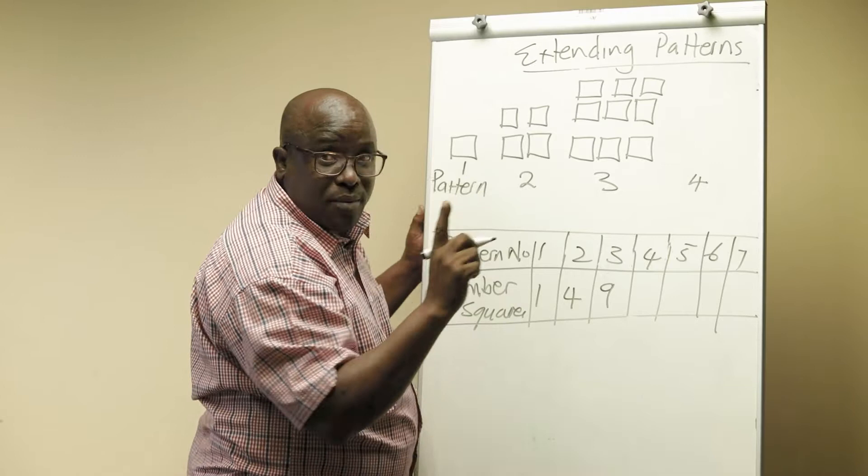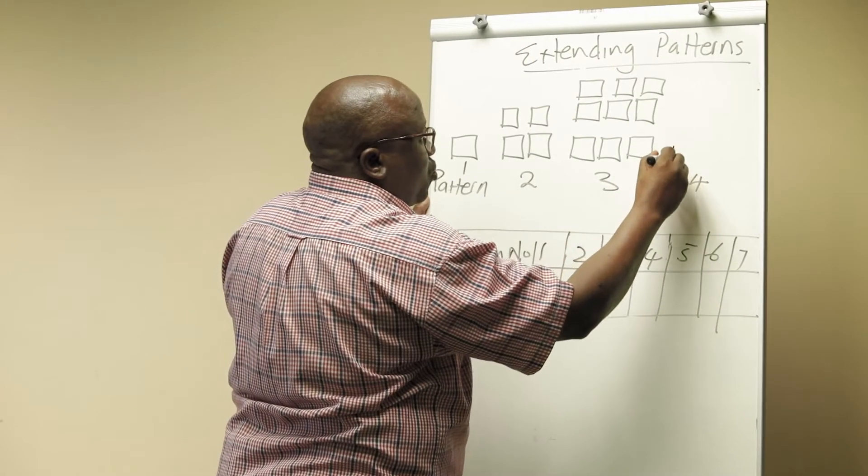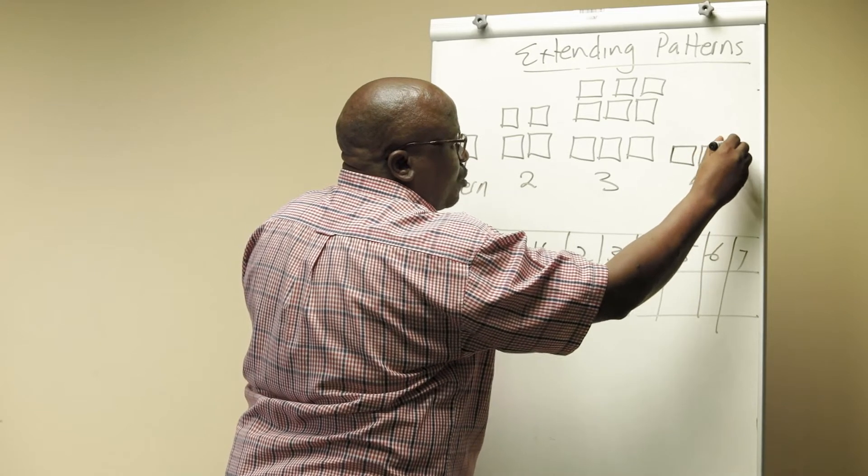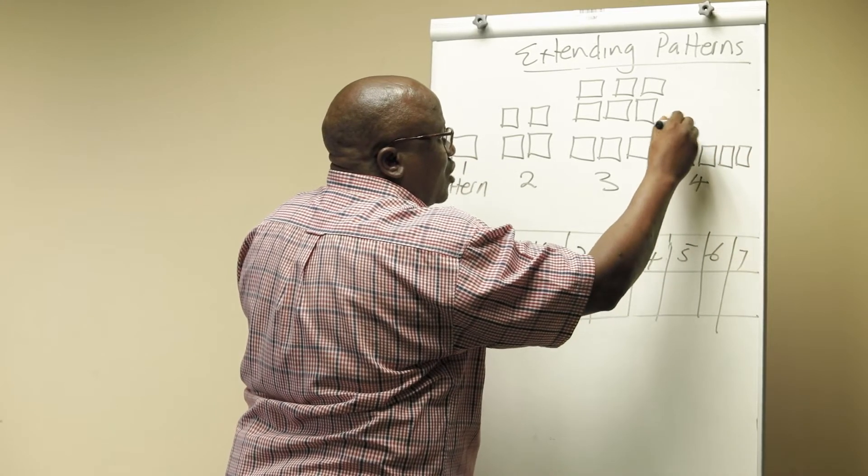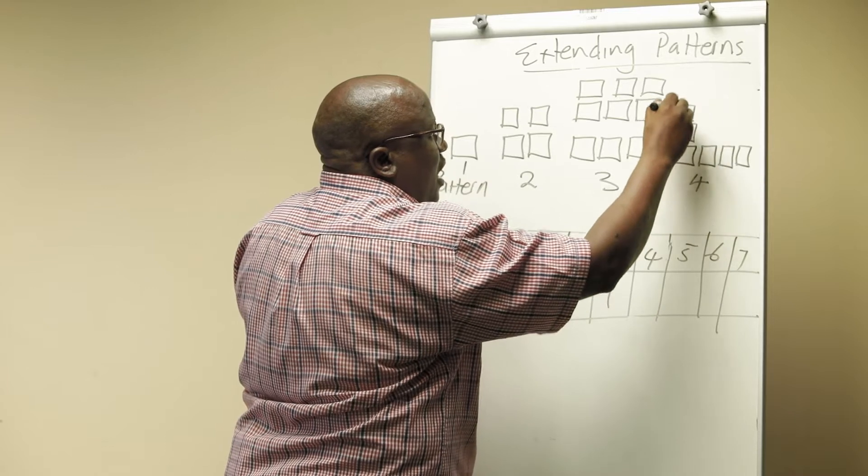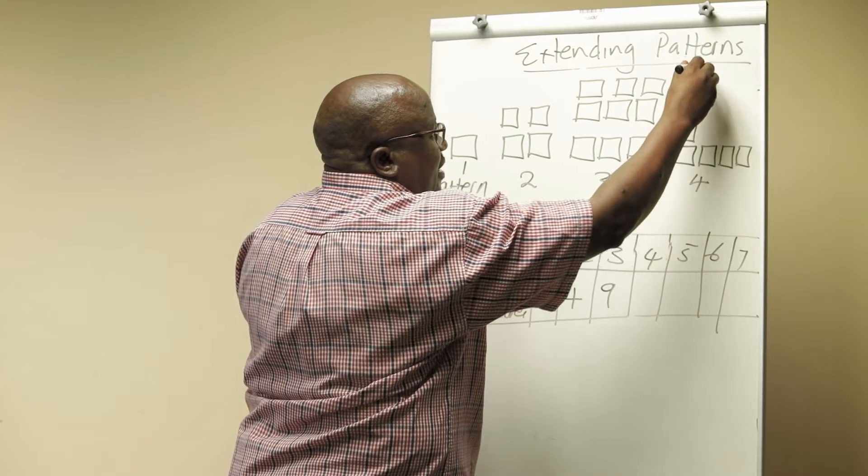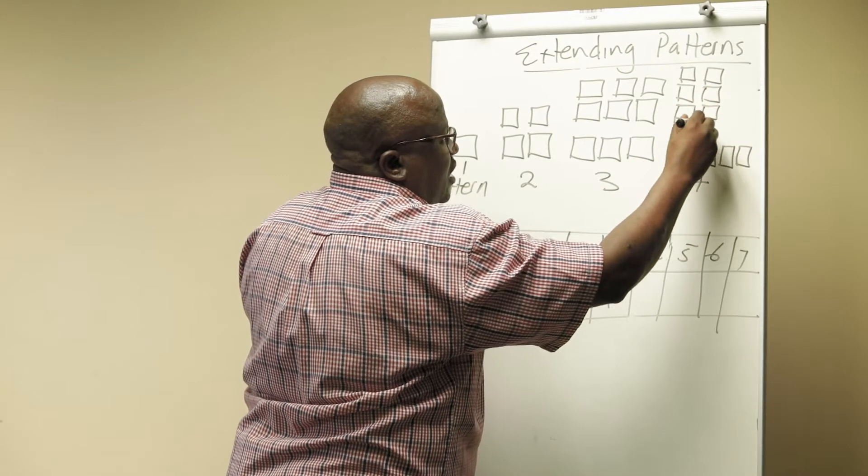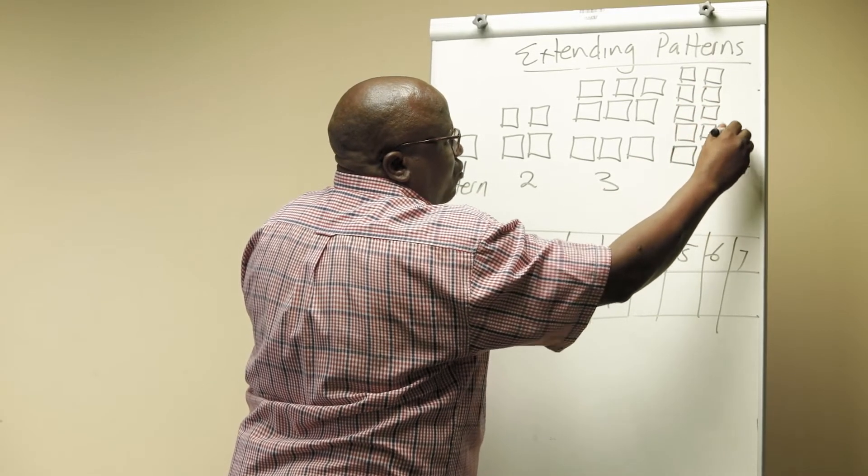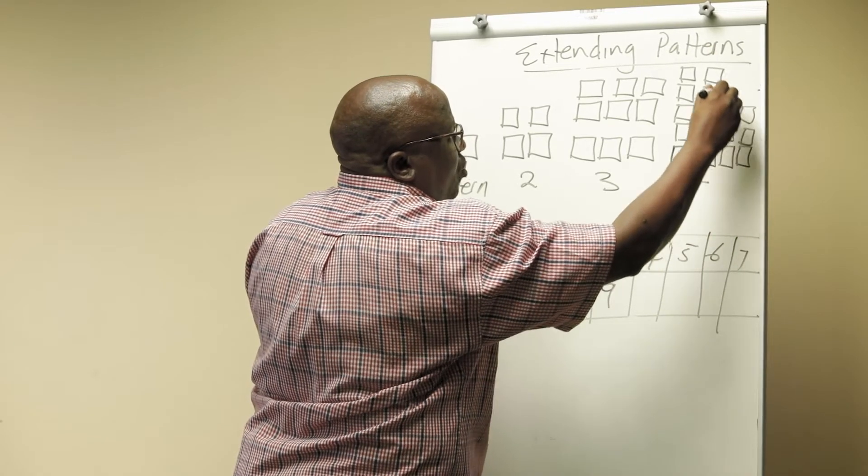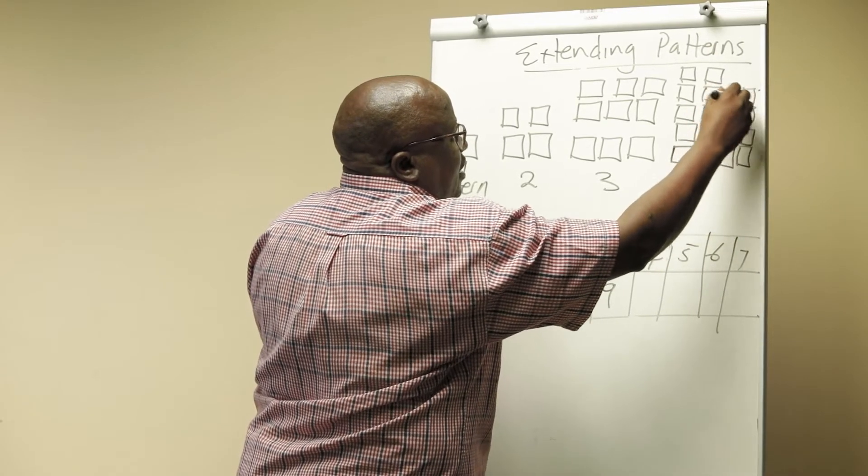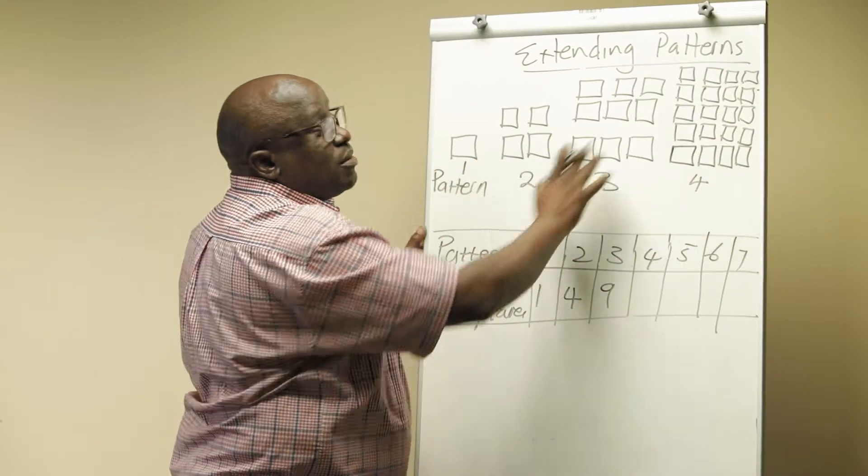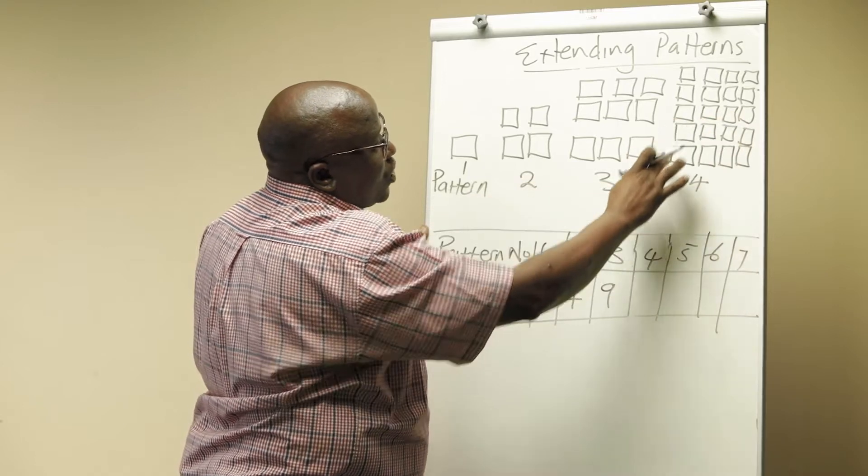I can therefore draw my pattern number 4 based on what I see coming out. There should be four patterns at the bottom, and they must go four steps up like that. And then I complete the whole set of squares as shown on the board right now. Now, so you can almost estimate what pattern number 5 will look like.